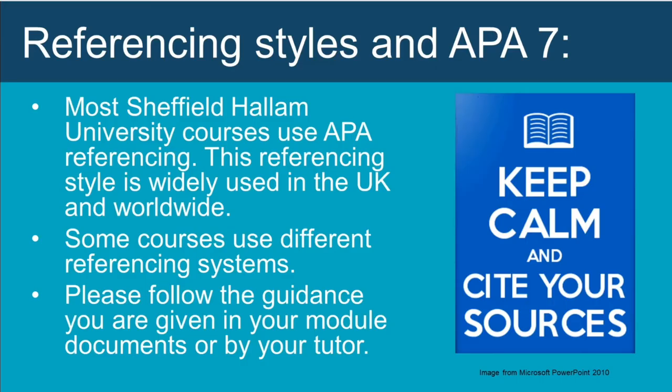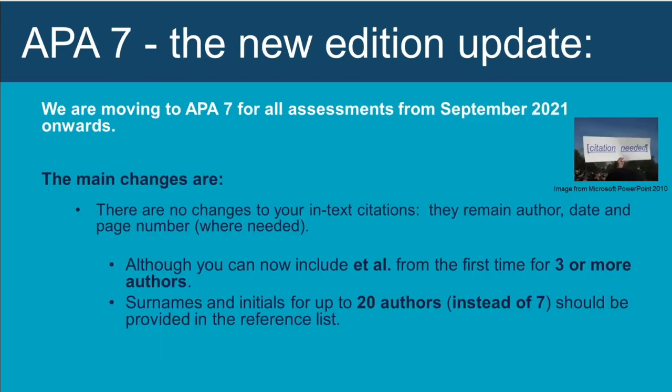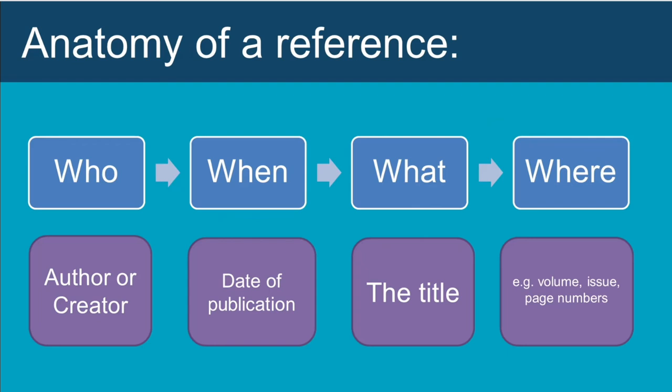APA 7 is the referencing style recommended for most courses at Sheffield Hallam. It is widely used in the UK and across the world, and the majority of online reference generators have already moved to APA 7. Please follow the guidance given in your module documents by your tutor. The Hallam Library is supporting this move, and the referencing guide is available through Library Online, with guides and quizzes to help you develop your referencing skills. You can also use Library Online chat for any referencing queries.